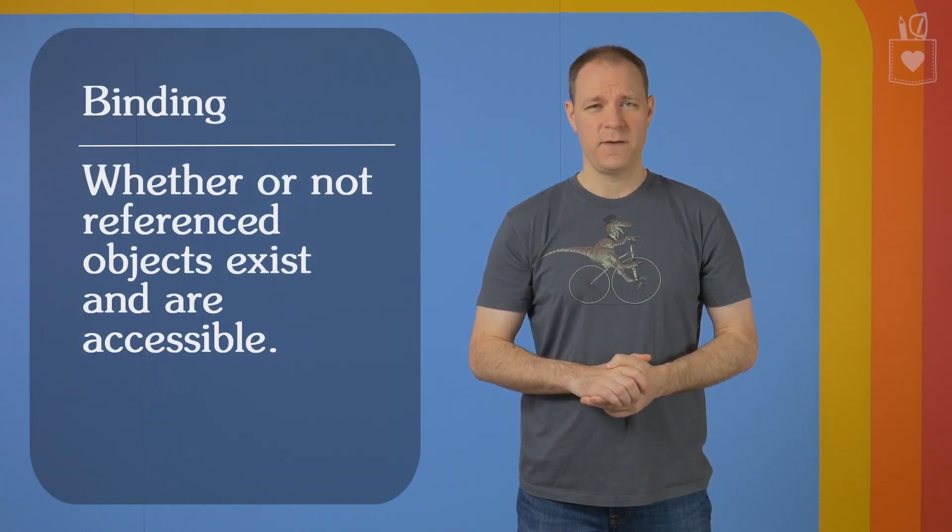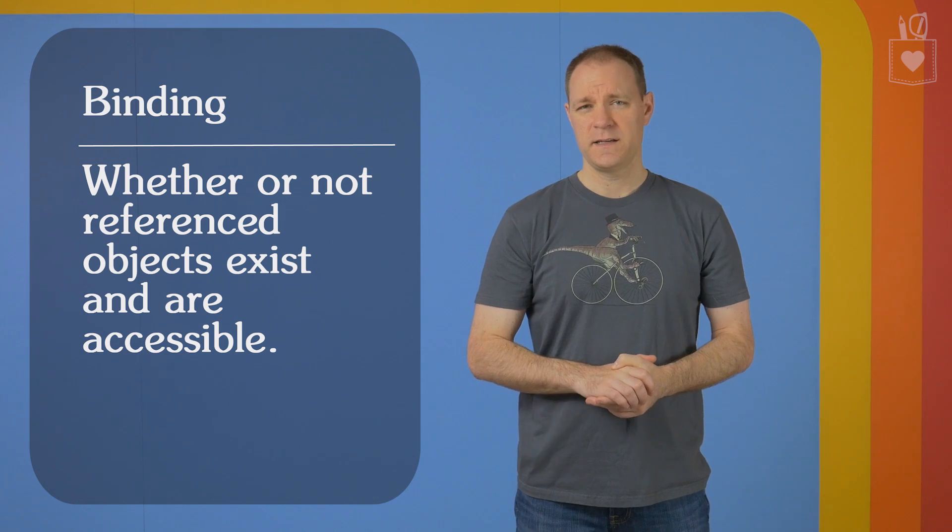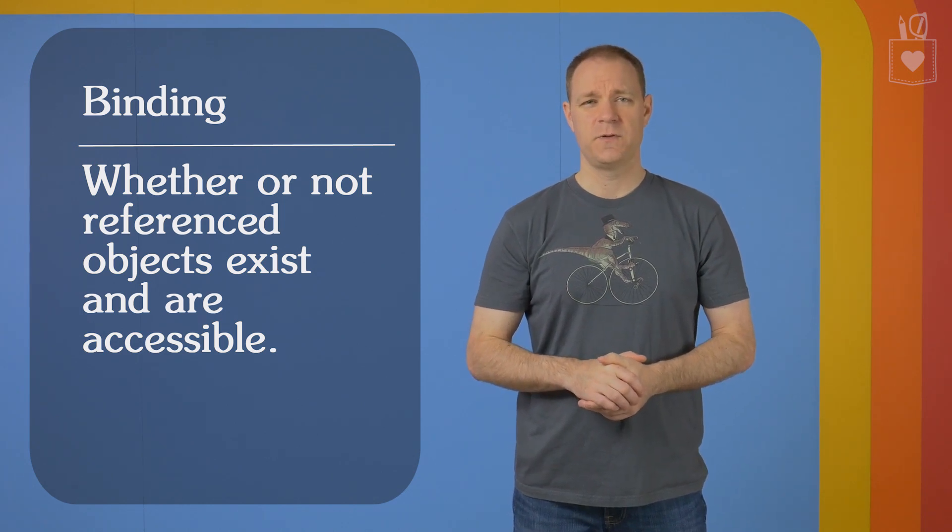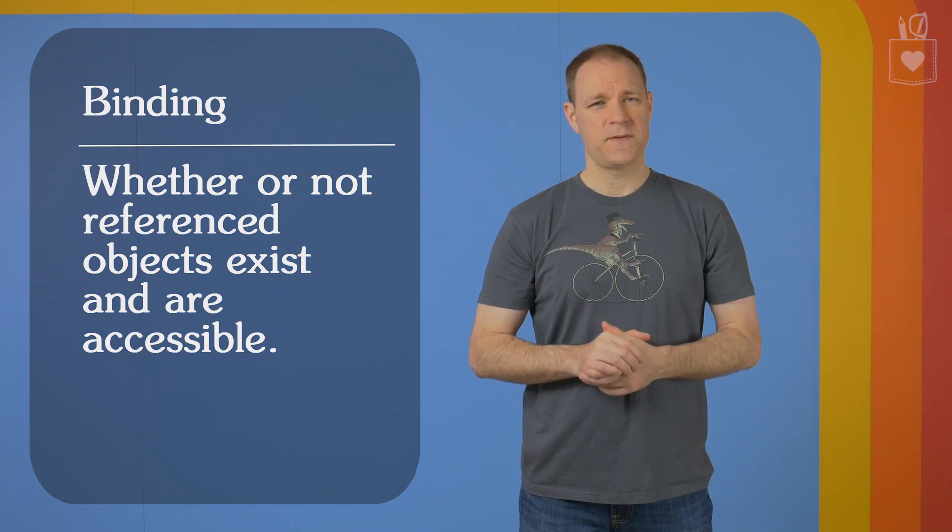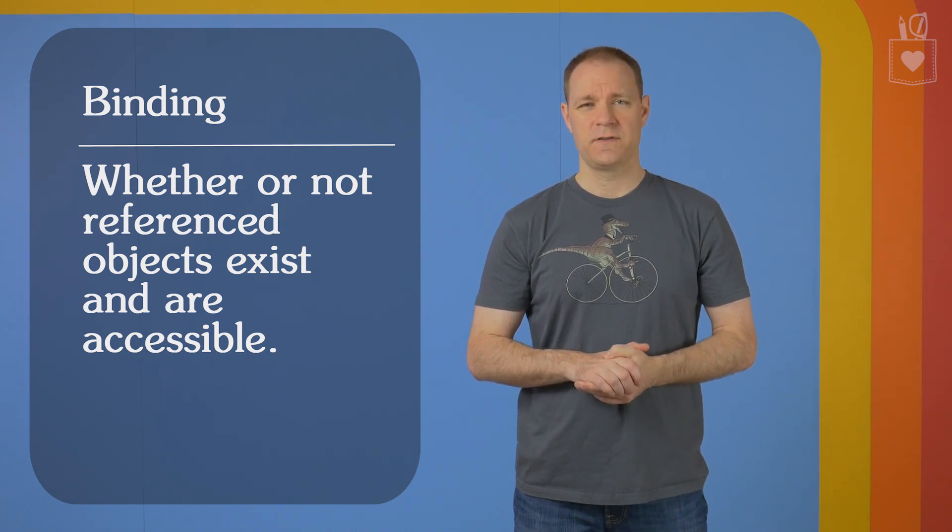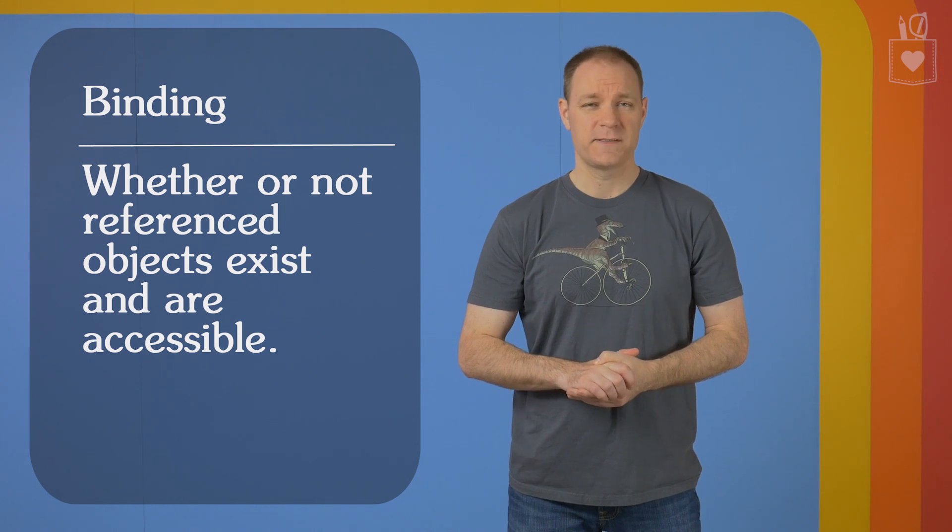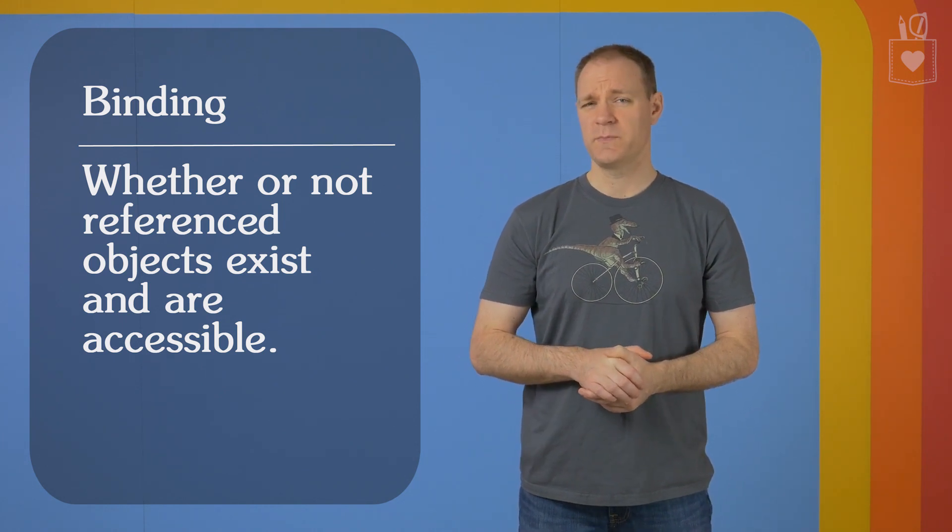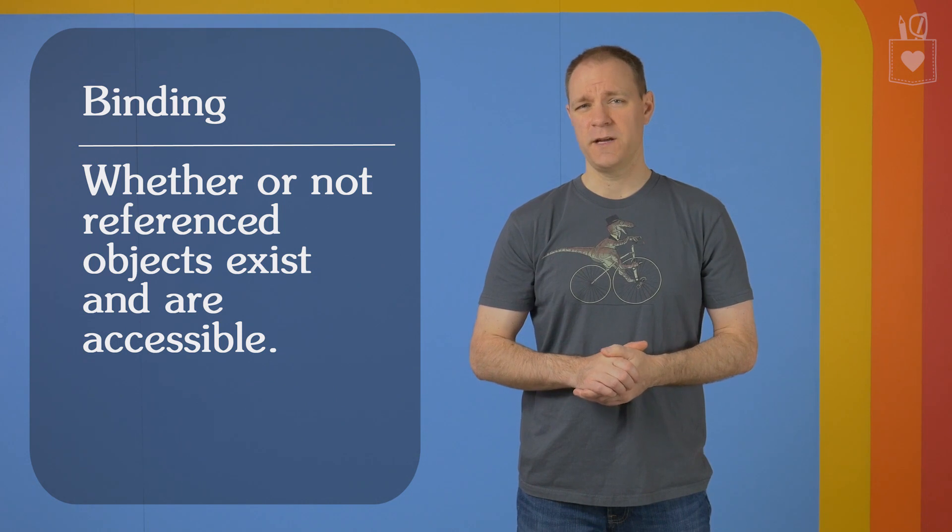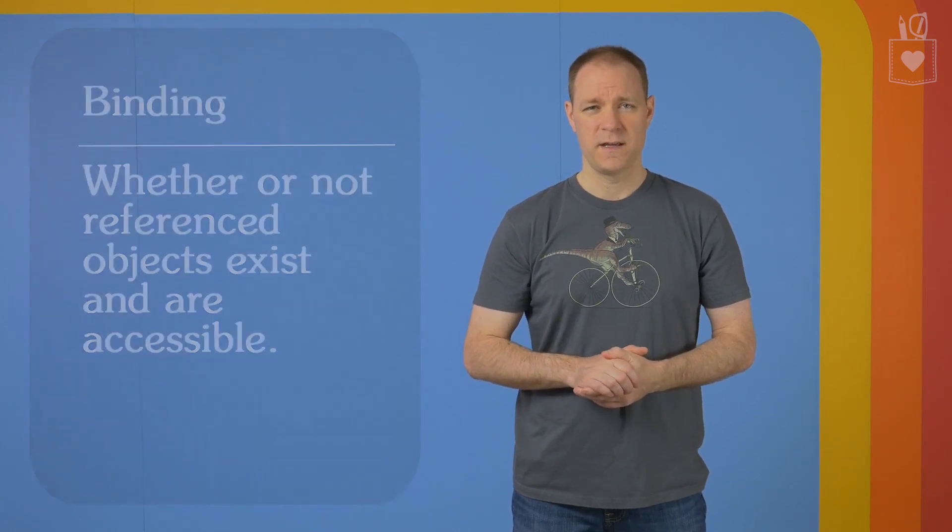Step two is called the binding step. This is the step where SQL Server begins to care about whether or not the stuff you're trying to reference is valid. It takes the tree that it mapped out earlier and begins to connect those to real life objects. If those objects don't exist in SQL Server, it gets mad about that. Other things that it gets upset about include whether or not the user has permission to access or read from the objects that you're trying to reference in the query, as well as whether or not your group by statement might be valid. If you miss a column in the group by that's in your select, and you have aggregates, this is the step where it's going to complain about that too.